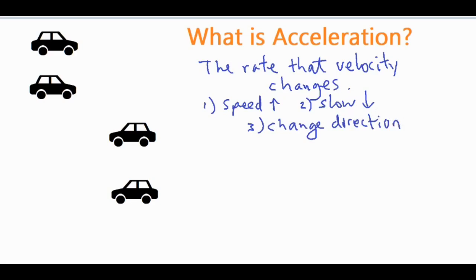Acceleration has nothing to do with how fast an object is actually moving at that moment — that is the velocity or the speed. Oftentimes, because they're so closely related, people think if something has a high acceleration that also means it's moving very quickly. But it just means the rate that it's gaining speed, lowering its speed, or changing direction is high — that doesn't necessarily mean it's moving fast or slow.